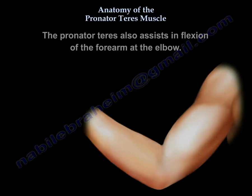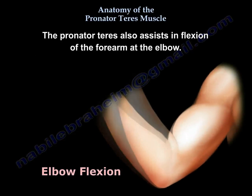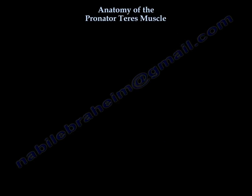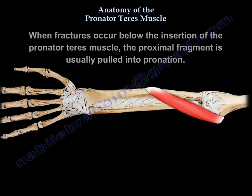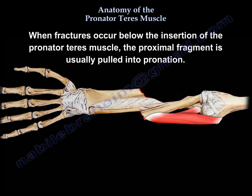The pronator teres also assists in flexion of the forearm at the elbow. When fractures occur below the insertion of the pronator teres muscle, the proximal fragment is usually pulled into pronation.